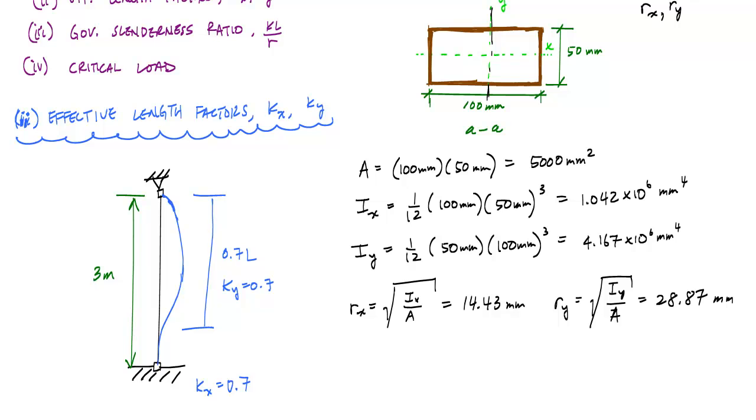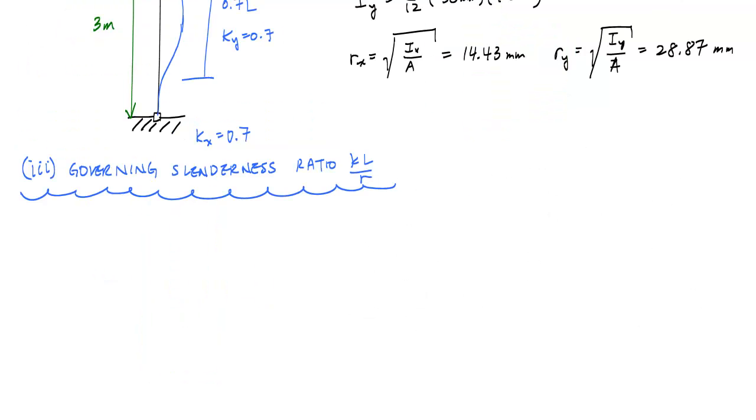And so the next thing that we want to do is actually calculate now the governing slenderness ratio. This governing slenderness ratio is the maximum of the two possible slenderness ratios, which is a comparison of the slenderness ratios for the x or buckling about the x-axis and the slenderness ratio for buckling about the y-axis.